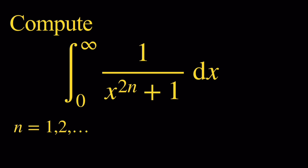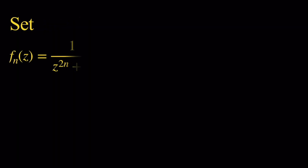In general, if 2n was a real number, what would be the values of n for which this integral would be convergent? Let's denote this integral by I sub n. We're going to introduce some notations, so we're going to denote by f sub n the function defined by f sub n of z equals 1 over z to the 2n plus 1.